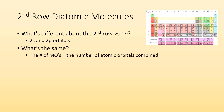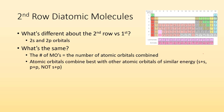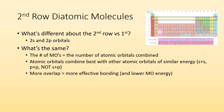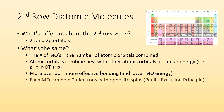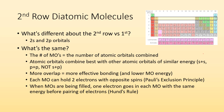So what's the same? Well, the number of molecular orbitals is equal to the number of atomic orbitals combined. Atomic orbitals combine best with other atomic orbitals of similar energy, meaning that s and s combine best, and p and p combine together is best. But s combining with p is not as good. The more overlap we get, the more effective bonding we have and the lower the molecular orbital energy. Each molecular orbital can hold two electrons with opposite spins — Pauli's exclusion principle. And when molecular orbitals are being filled, one electron goes into each molecular orbital with the same energy before pairing — Hund's rule.